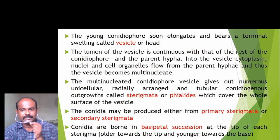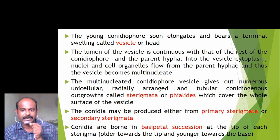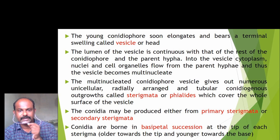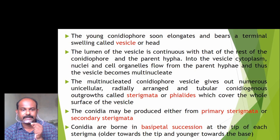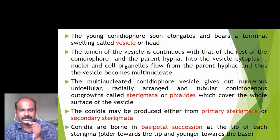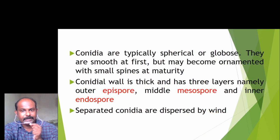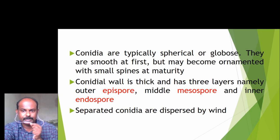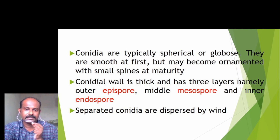The multinucleate conidiophore vesicle gives out numerous unicellular, radially arranged, and tubular conidiogenous outgrowths called sterigmata or phialides, which cover the whole surface of the vesicle. Conidia may be produced either from primary sterigmata or secondary sterigmata. Conidia are borne in basipetal succession, meaning the older conidia form towards the tip and younger ones are seen towards the base. Conidia are typically spherical or globose in shape, smooth at first but may become ornamented with small spines at maturity. The conidial wall is thick with three layers: the outer epispore, middle mesospore, and inner endospore. The separated conidia are dispersed by wind.